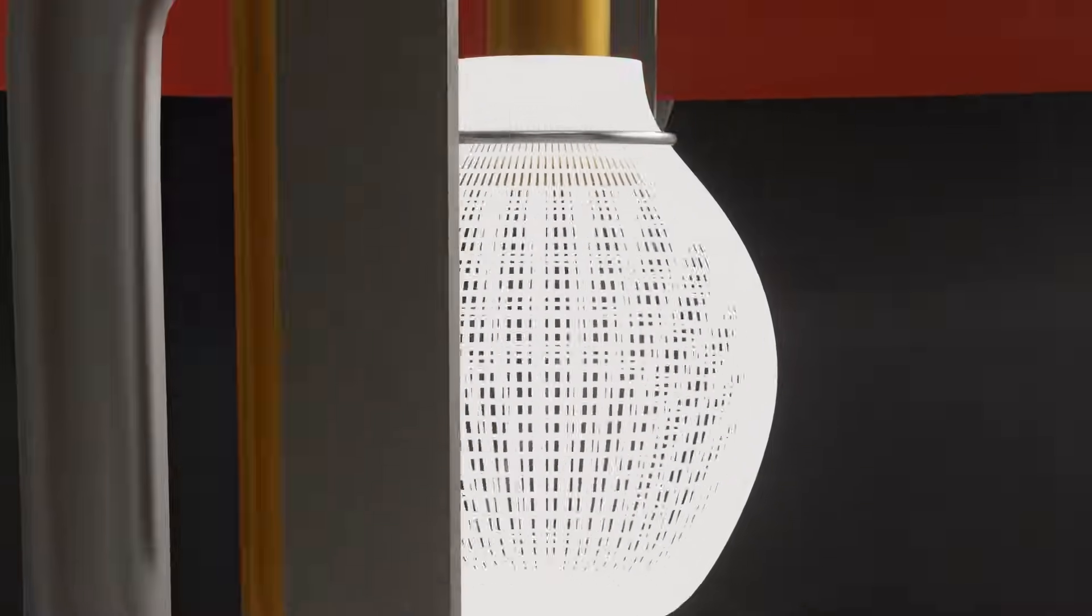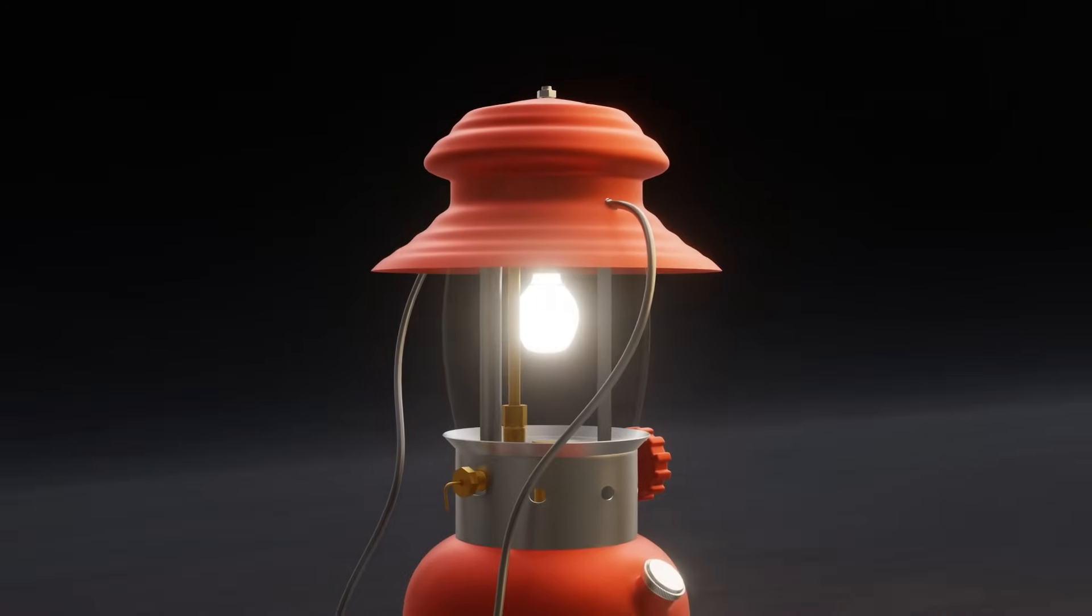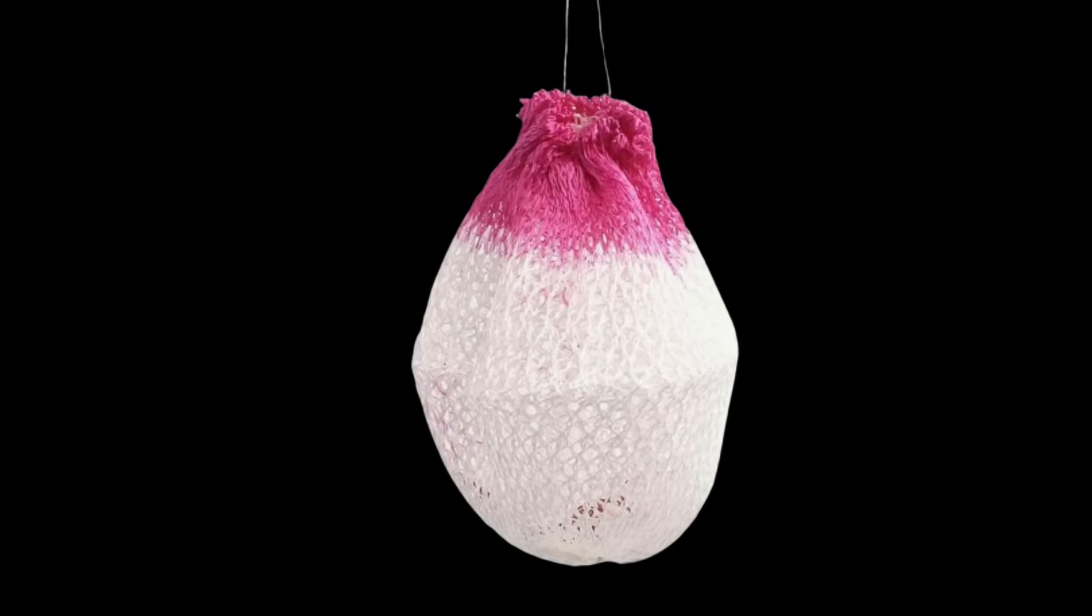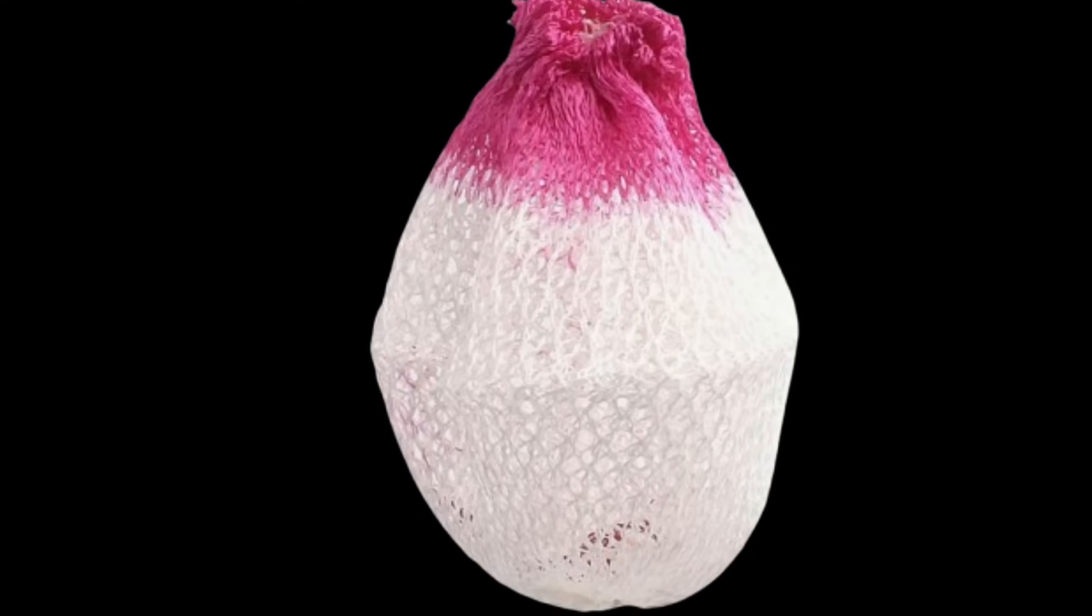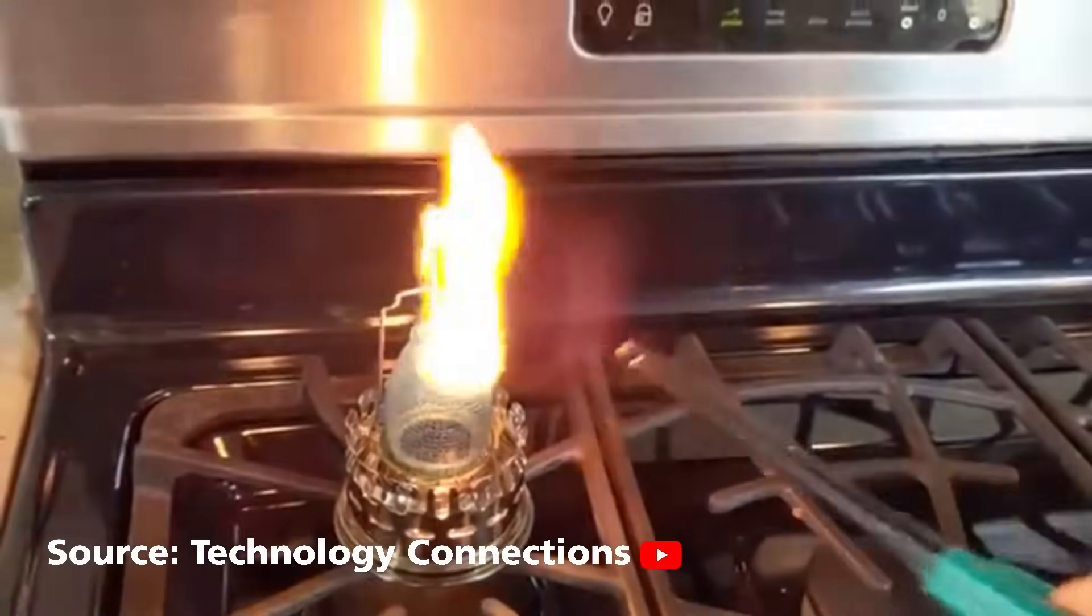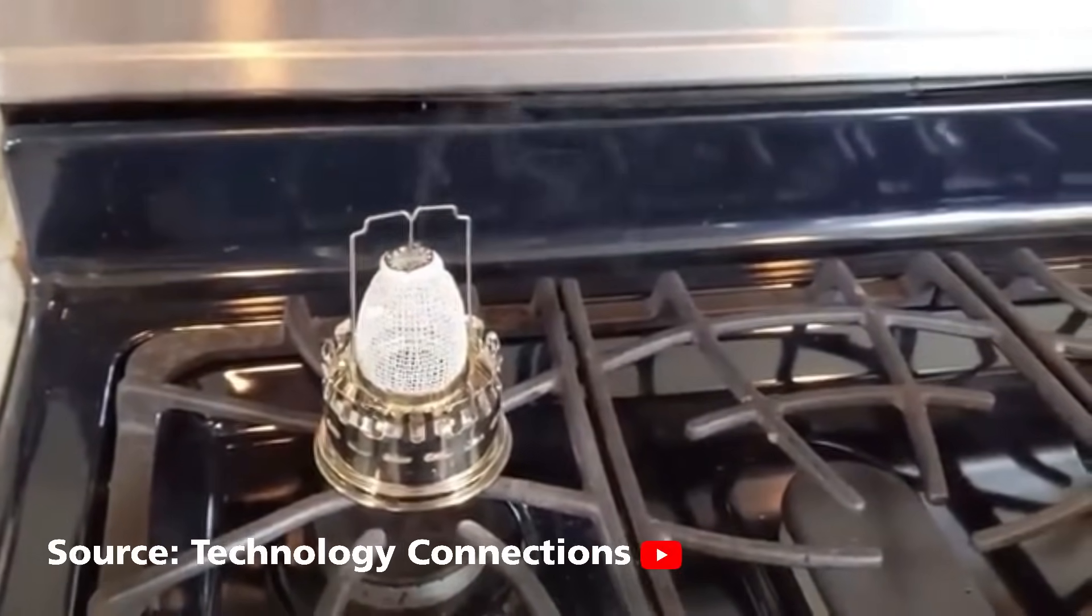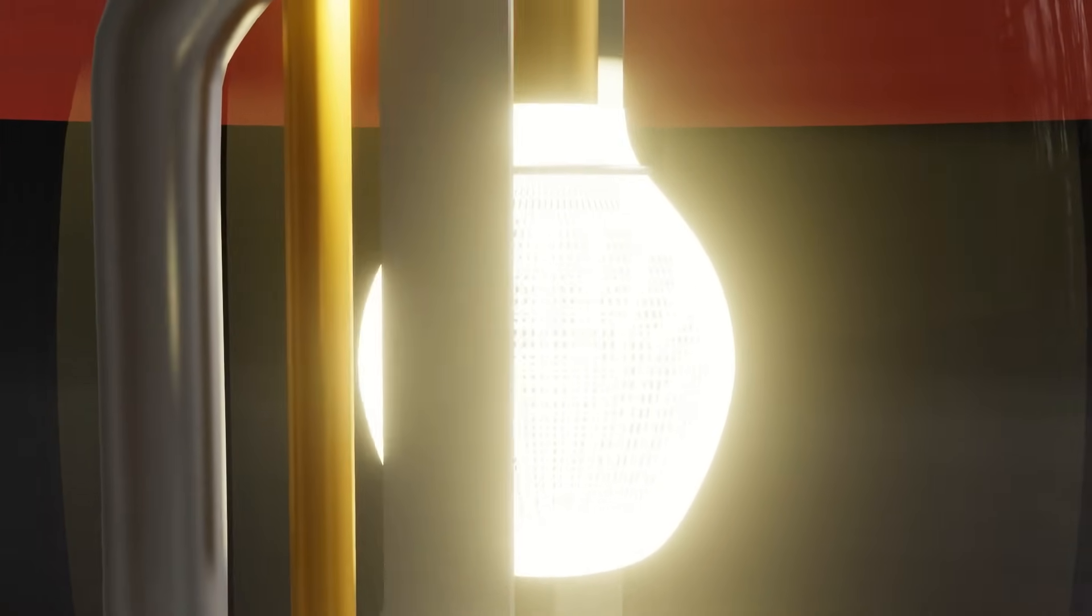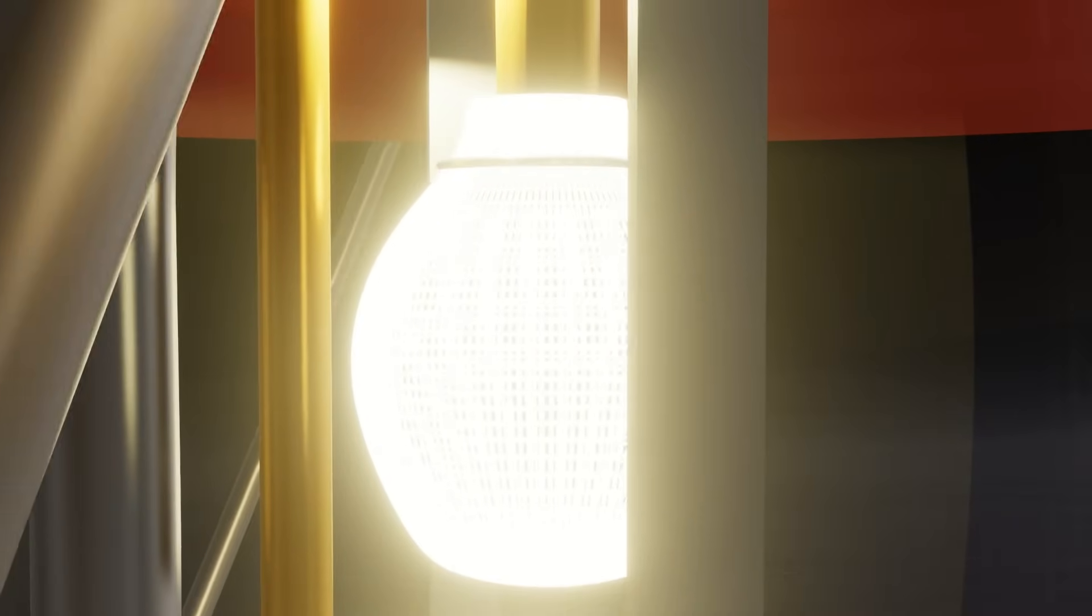Finally, we arrive at the mantle, the key component of the lantern responsible for producing bright, incandescent white light when heated by a flame. The mantle is a pear-shaped fabric bag made from materials like silk, artificial silk, or rayon. Its fibers are impregnated with metallic salts. When first exposed to flame, the fibers burn away in seconds, leaving behind a brittle ceramic oxide shell that retains the shape of the original fabric. This shell glows brightly, emitting visible light while producing minimal infrared radiation. The bright light emitted is not from fire itself, but from the mantle's glowing oxide structure.